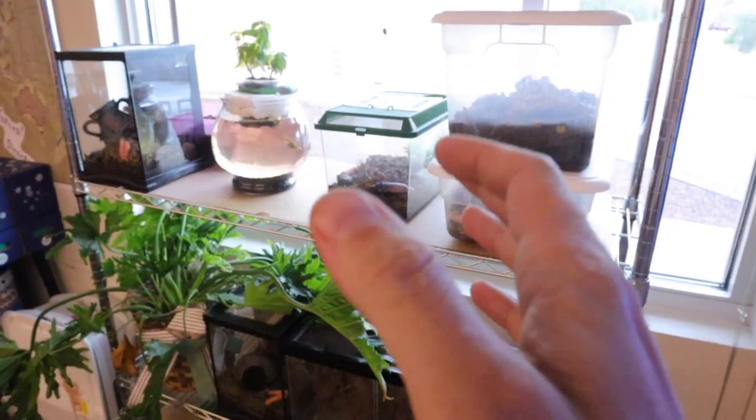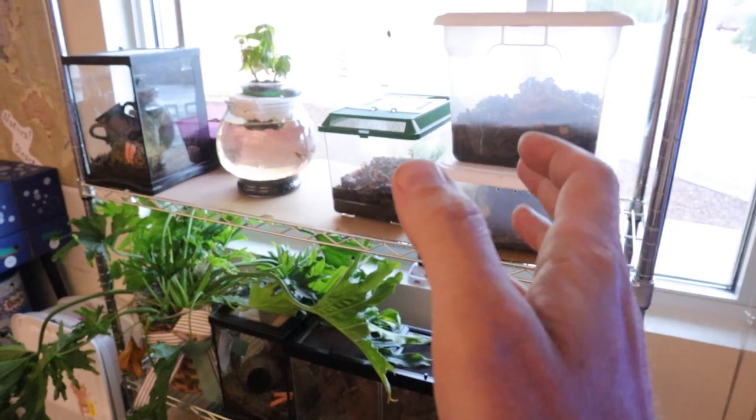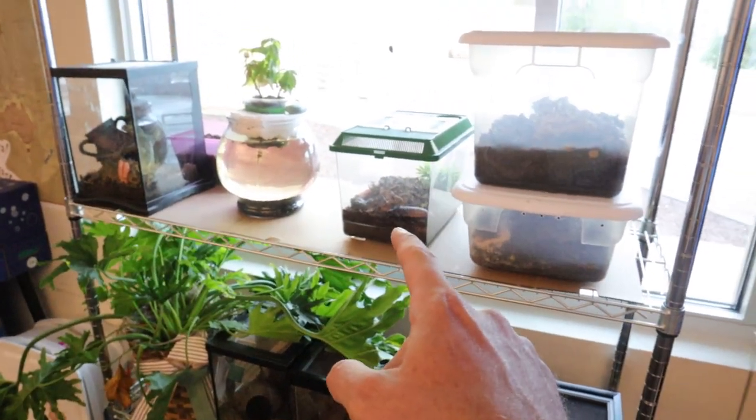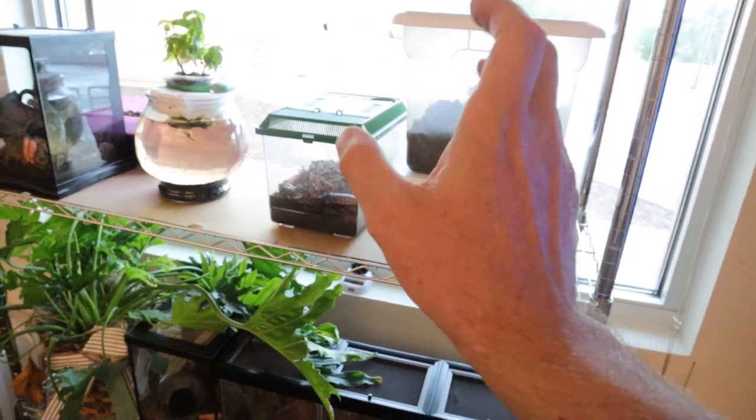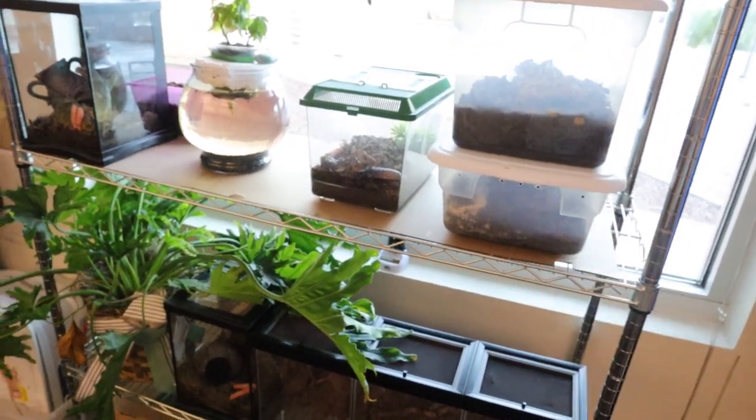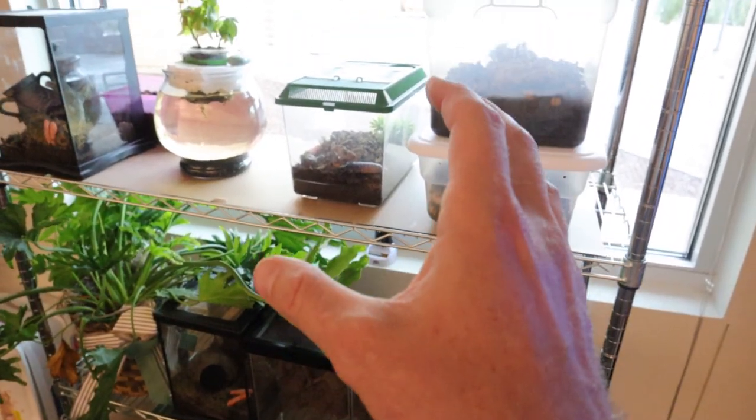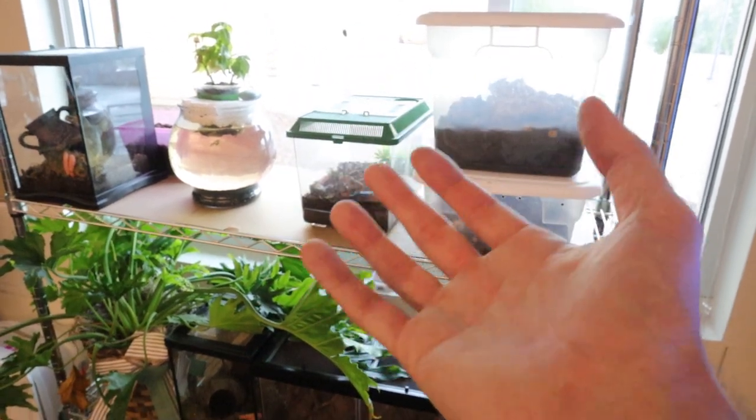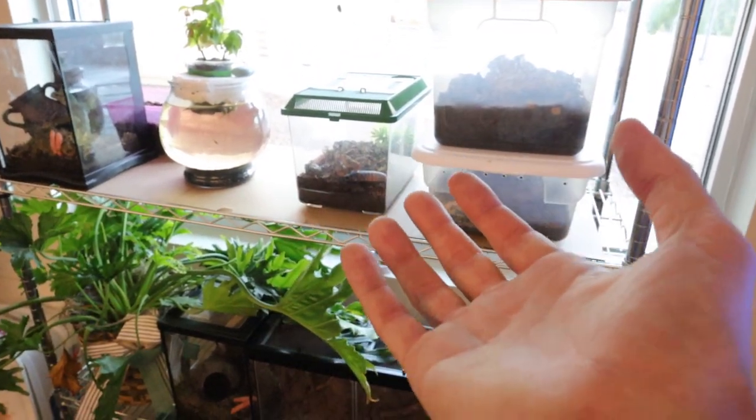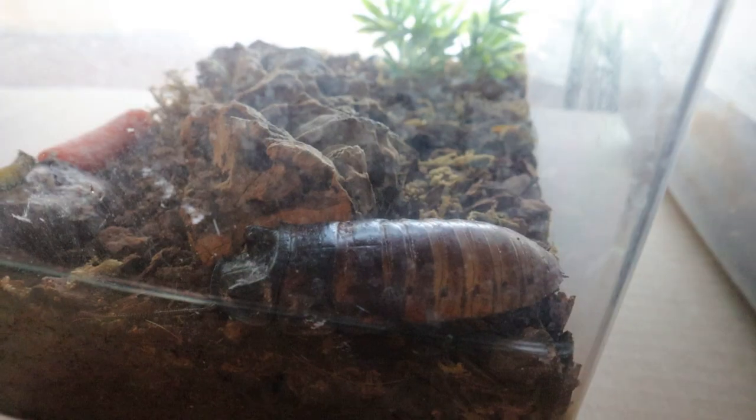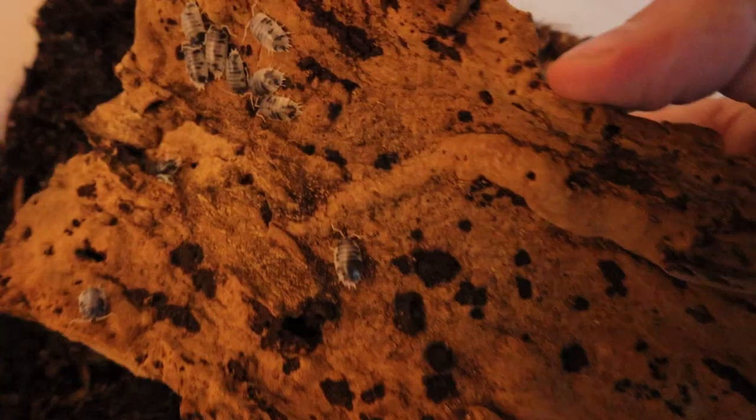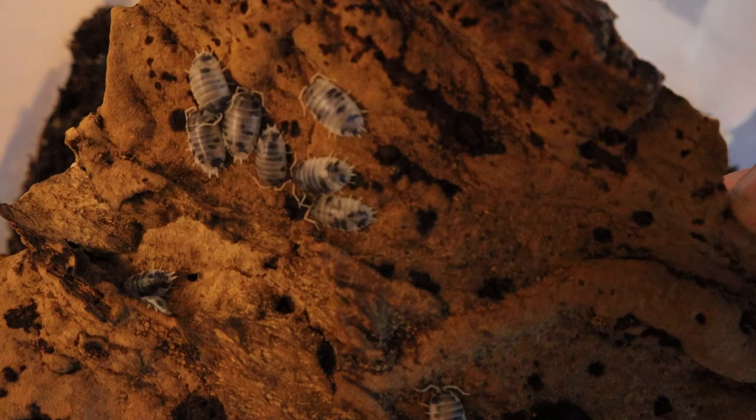So I don't have any actual animals here in the classroom this year, but I do have some roaches, some Madagascar hissing roaches, some isopods, Porcelia laevis, and Powdered Orange. And I'll be getting some different kinds of bugs, because part of the fifth grade science curriculum talks about energy transferring ecosystems and life cycles of animals. Nice big male Madagascar hisser there. Porcelia laevis, Dairy Cow Isopods. These guys are doing good.